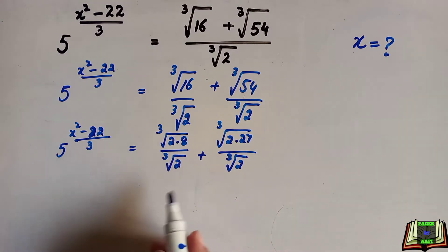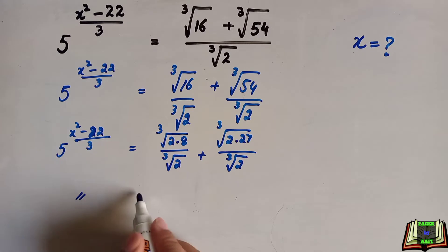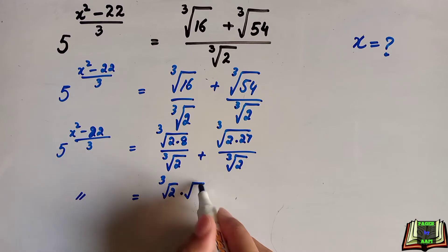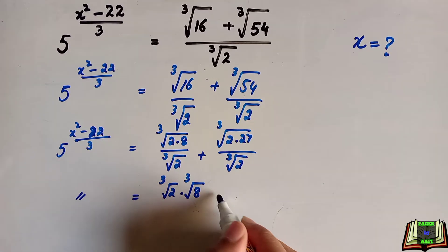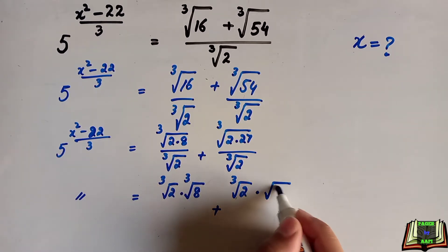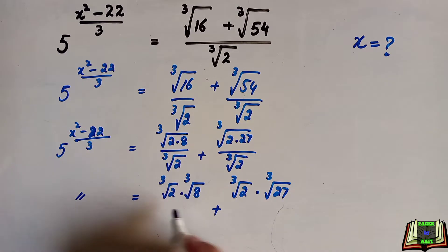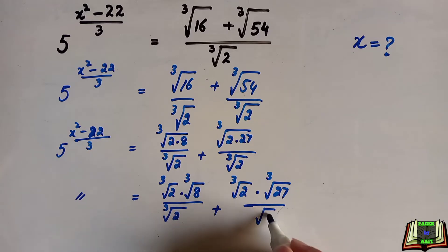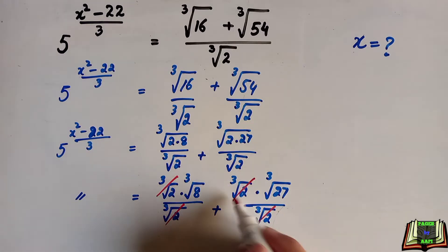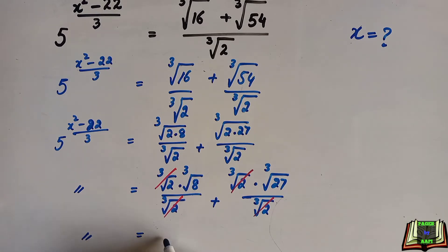Now we separately write these as cube root of 2 times cube root of 8, plus cube root of 2 times cube root of 27, divided by cube root of 2. The cube root of 2 on the numerator and denominator cancels out, leaving us with cube root of 8 plus cube root of 27.